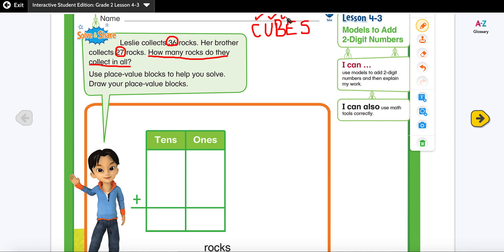B stands for box any math action word. Our math words are how many. We need to calculate that. In all shows that we are going to add it.